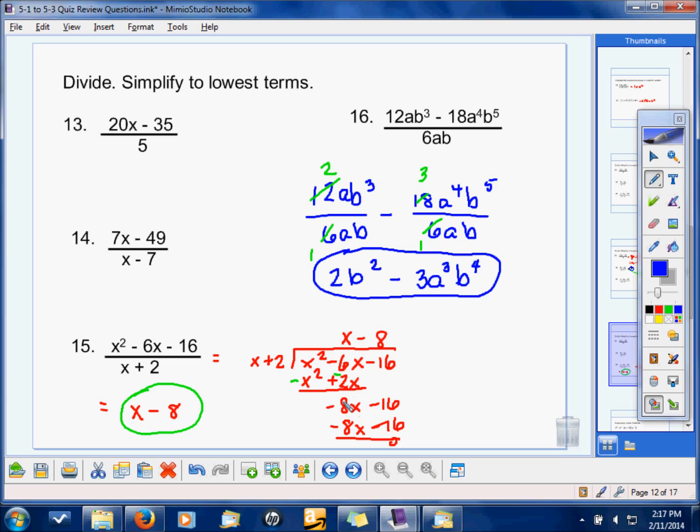So, negative 6 and negative 2 is negative 8. Bring down the negative 16. Then, ask yourself, what times X gives you negative 8X? That's where your negative 8 comes from. Multiply that out. Subtract. Well, it's the same, so it just comes out to be 0. So, your answer in this one is a nice, simple X minus 8.